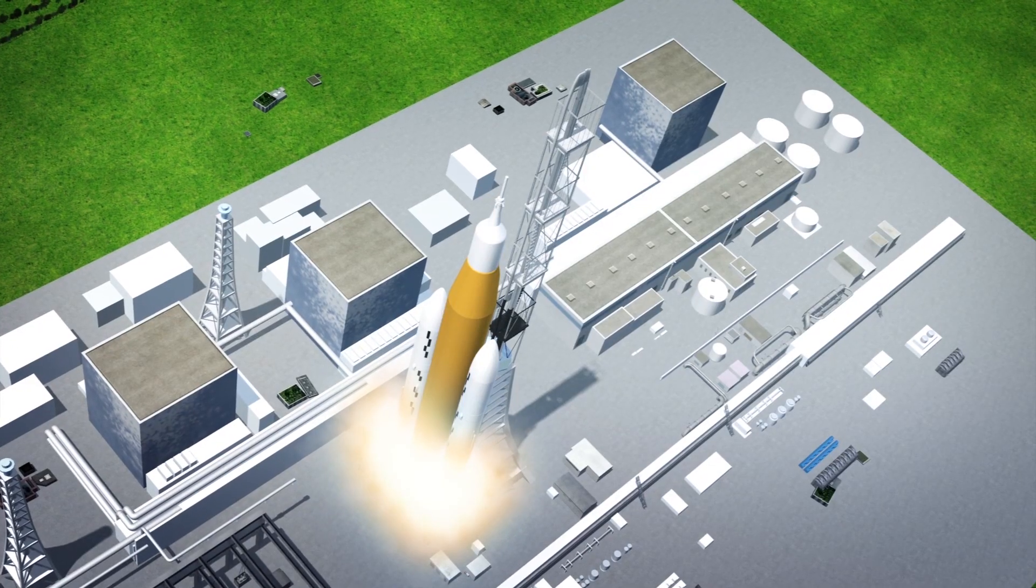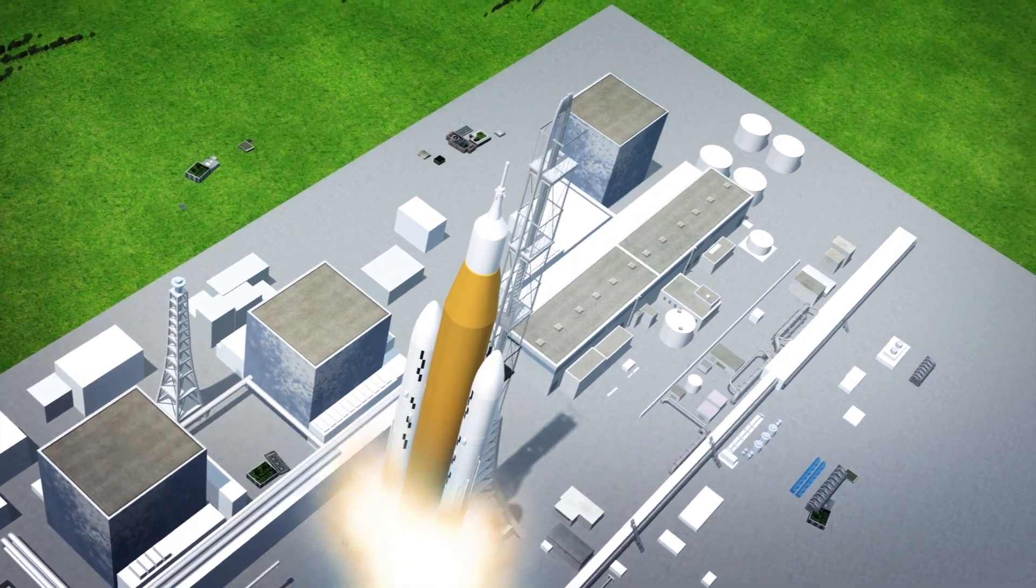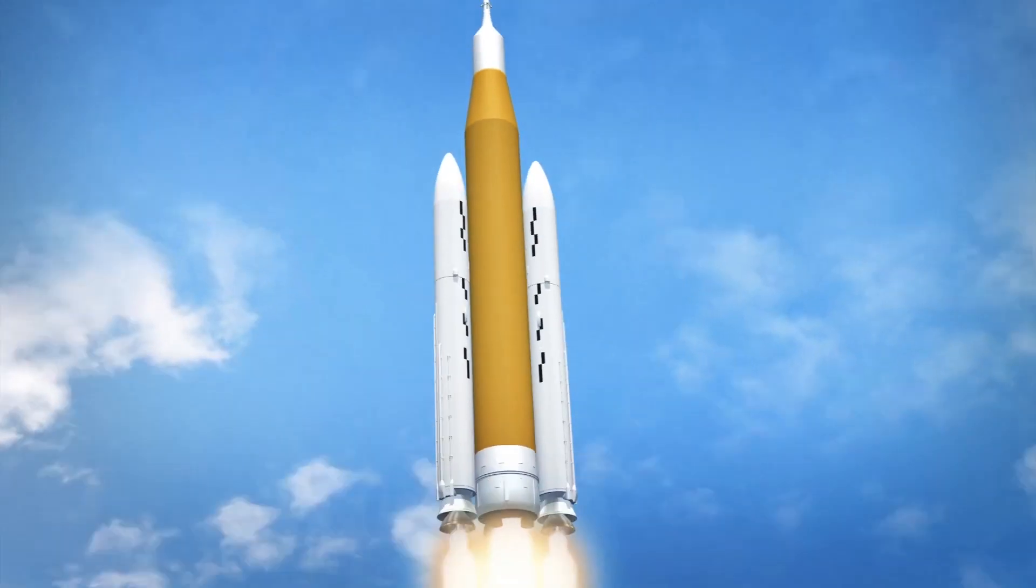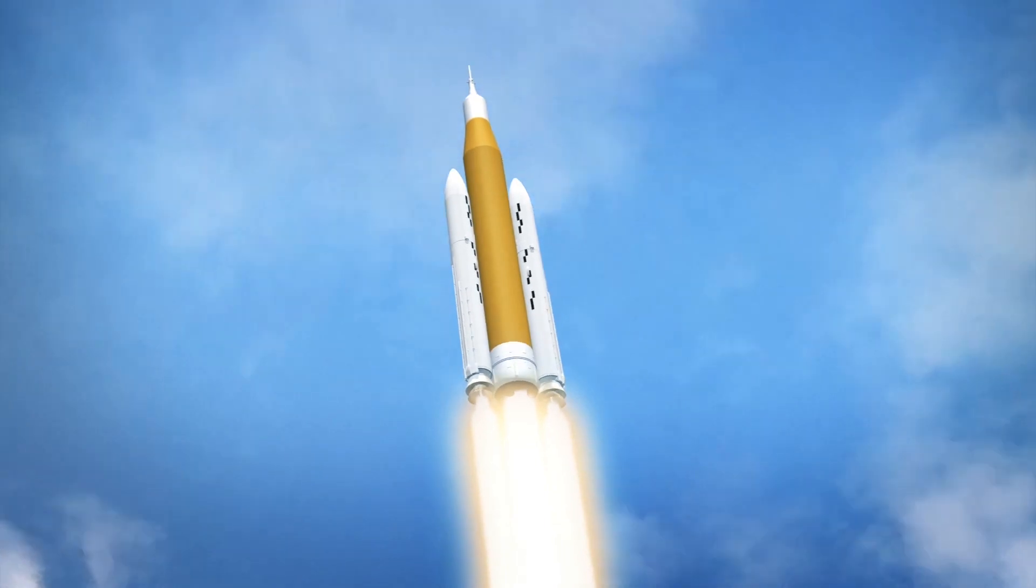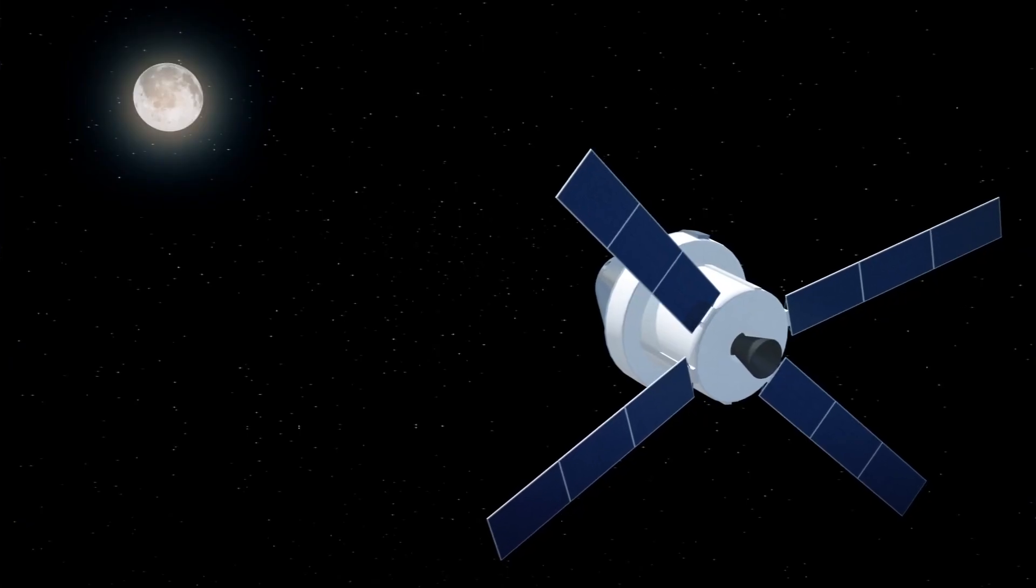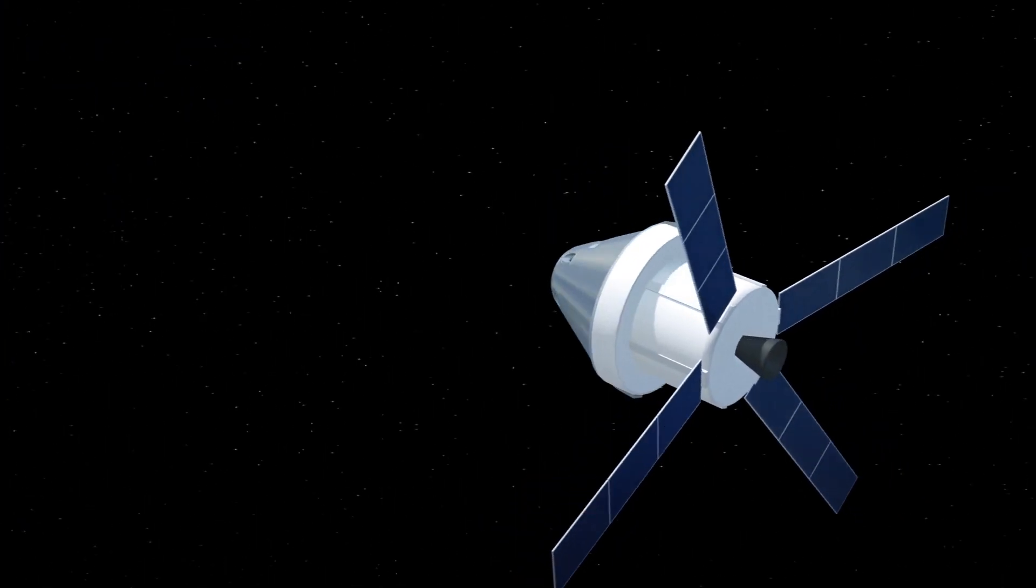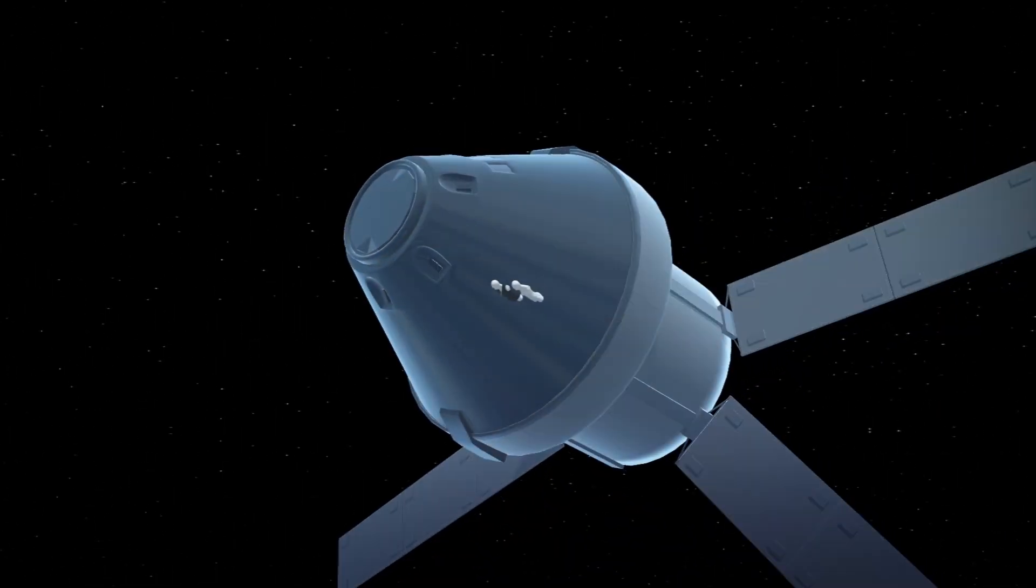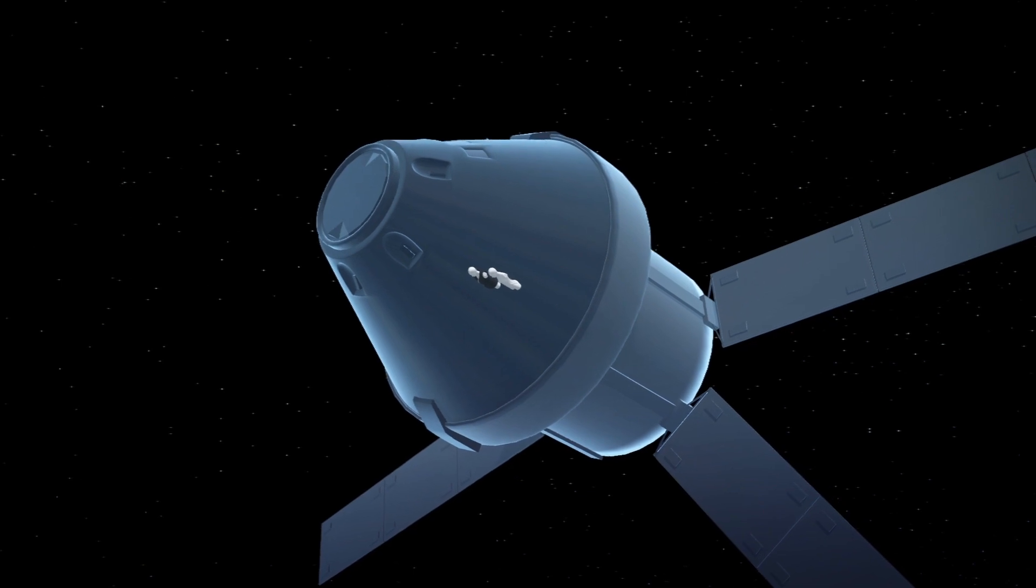Space.com reports that NASA will send astronaut dummies around the moon in the Orion spacecraft for the uncrewed Artemis I mission scheduled for next year. According to the outlet, NASA says the goal of the mission is to test a new piece of equipment designed to protect female astronauts from space radiation called the AstroRad.